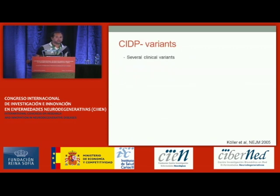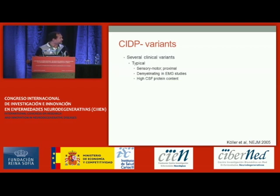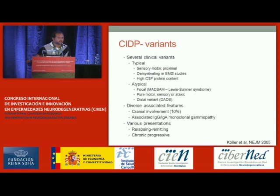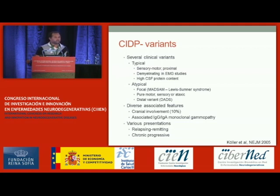There are several clinical variants. The typical CIDP is a sensory-motor, predominantly proximal disease with demyelinating features in the electrophysiological studies and high protein content in the CSF. But there are a number of other clinical variants, ranging from focal presentations, pure motor, pure sensory, or pure ataxic presentations, distal variants, cranial involvement, monoclonal gammopathy, and various presentations. It can be relapsing-remitting or chronic progressive, so it's pretty heterogeneous.